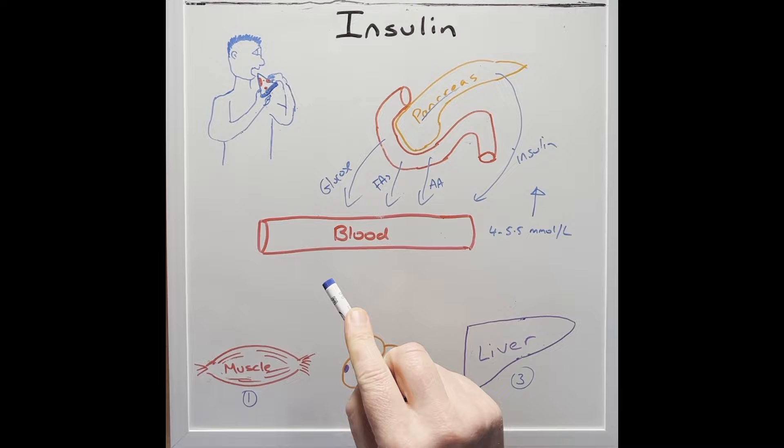Insulin then has a strong effect on these three organs, starting with the muscles. Insulin will bind to the muscle cells, which opens those glucose doors. Glucose will enter the muscles and are made into energy known as ATP to power the muscles.